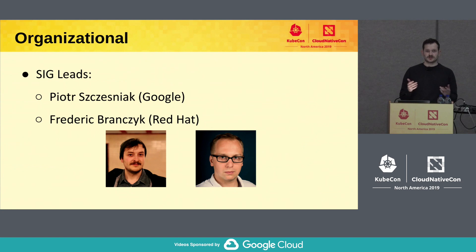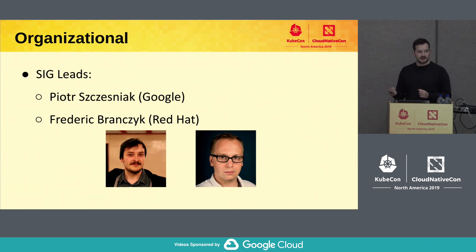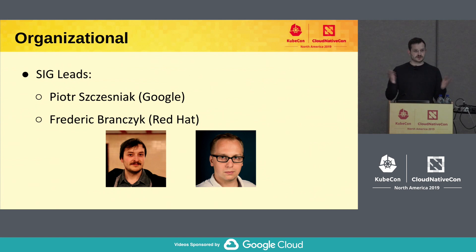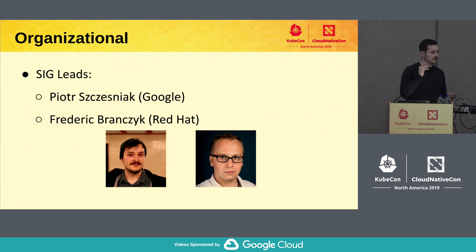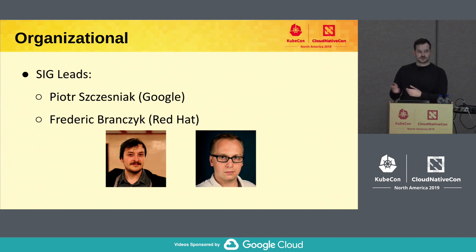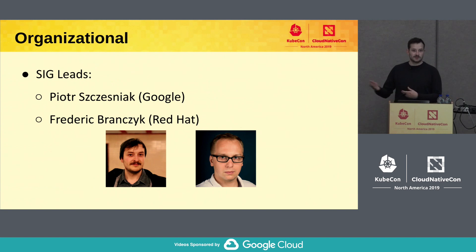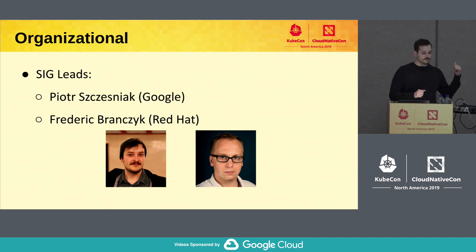Some overall things — hopefully everyone's already familiar with what Special Interest Groups within Kubernetes are. Essentially, Special Interest Groups are formally defined groups around things like cloud providers, instrumentation, or API machinery. People who commonly work together formed these groups within Kubernetes to more efficiently collaborate. Instrumentation, as the name implies, is all about observability and those kinds of things.